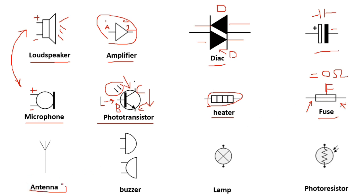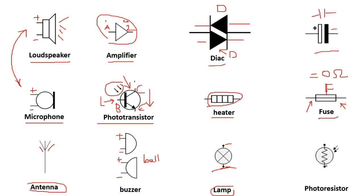Here we have the antenna symbol. Here we have a buzzer or bell — the symbol of a buzzer or bell always has two terminals with plus and minus. And here we have the lamp symbol, also with two terminals.